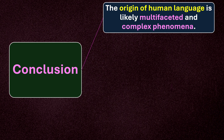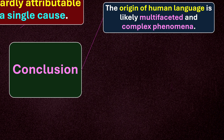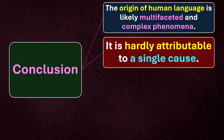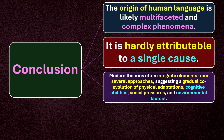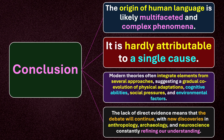Now let's conclude. The origin of human language is likely a multifaceted and complex phenomenon. It is hardly attributable to a single cause, and we are still divided on this. Modern theories often integrate elements from several approaches, suggesting a gradual co-evolution of physical adaptations, cognitive abilities, social pressures, and environmental factors. The lack of direct evidence means that the debate about the birth of language will continue, with new discoveries in anthropology, archaeology, and neuroscience constantly refining our understanding.